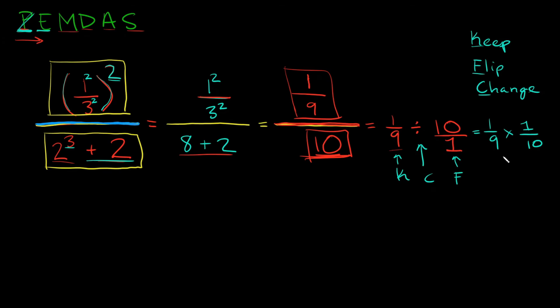So now we just have one ninth times one tenth. So how do you multiply fractions? All you have to do is multiply straight across. So what's one times one? Well that's equal to one. So that's your numerator.